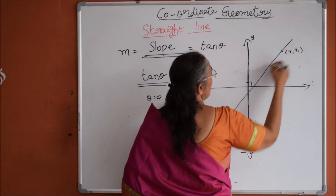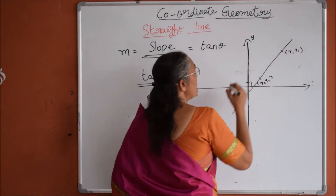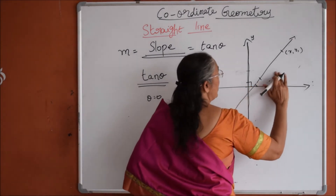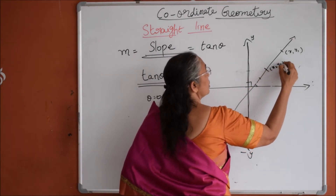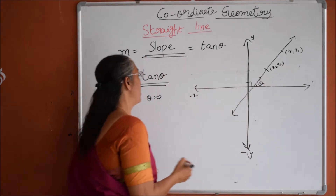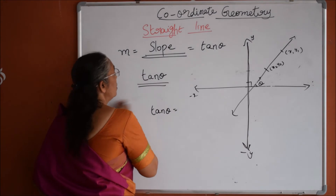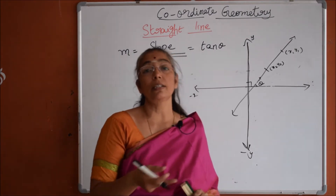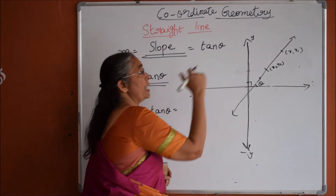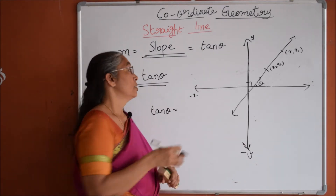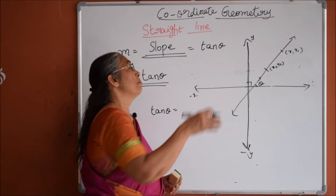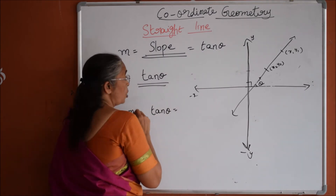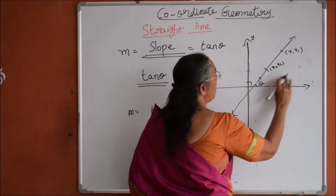The two points are x1, y1 and x2, y2. The angle is not given, but we know that tan theta is the slope, and we want to find the slope of this line. So how can we find it? We need slope in terms of x1, y1 and x2, y2, which are the points on that line.